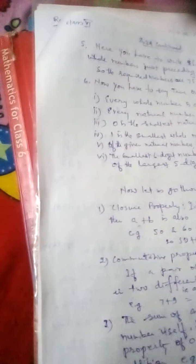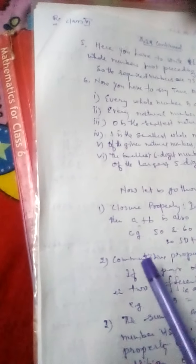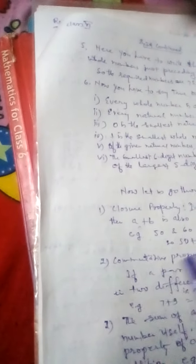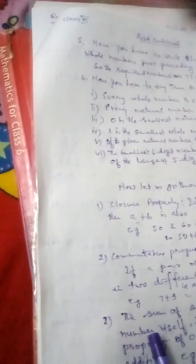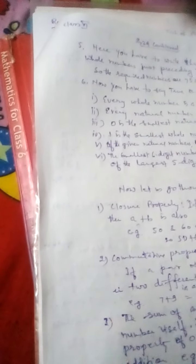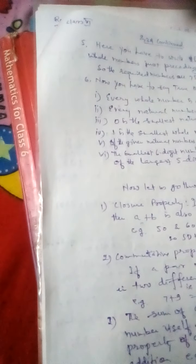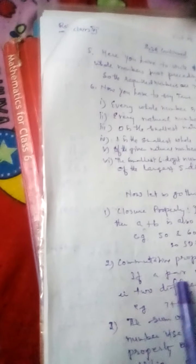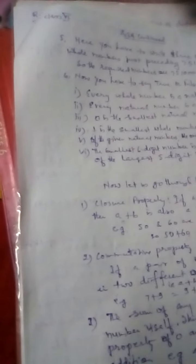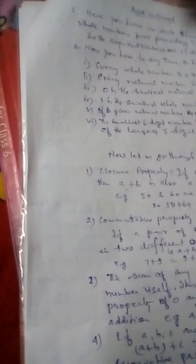Now let us go through some properties of addition. Closure property, commutative property. Closure property means if you add any two whole numbers, again you will get a whole number. Then commutative property means if you reverse the order of addition, the sum will be the same.